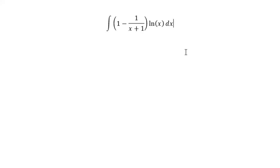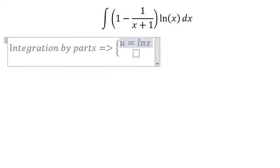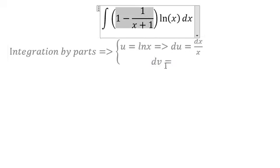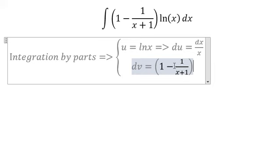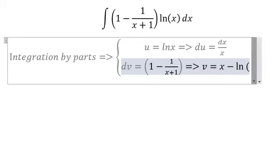Now we can use integration by parts. In this situation we have u and v. Let u equals ln(x), so we have du equals dx/x. dv equals (1 - 1/(x+1)), so we get v equals x minus ln(x+1).